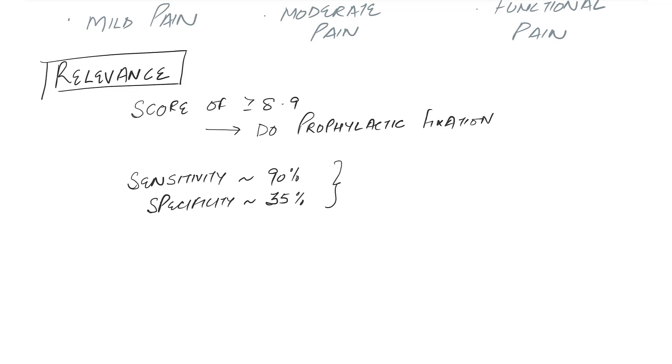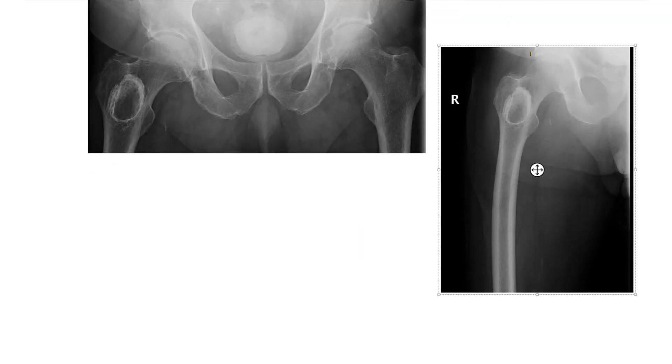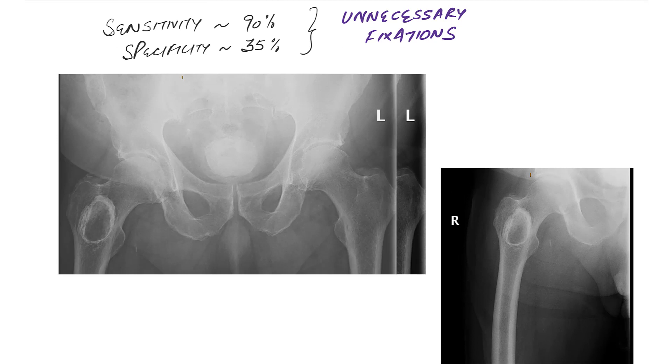It is very important to know the sensitivity and specificity of the MIREL scoring system is only 35 percent. This is very important because it can lead up to unnecessary fixations. This is a drawback of MIREL score. Now I thought we'll do a real life example.